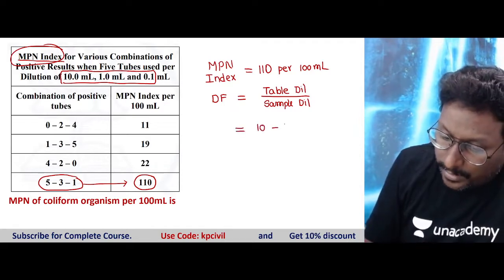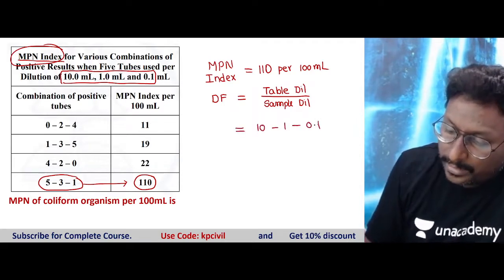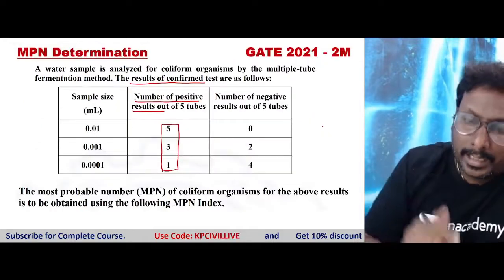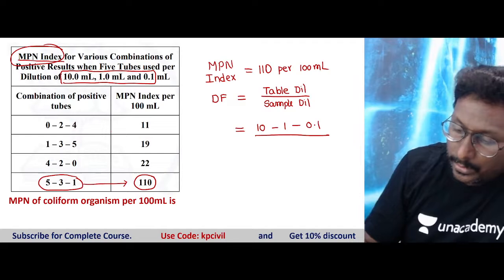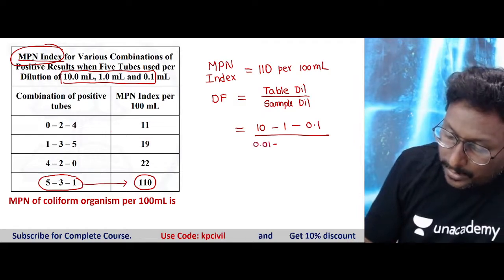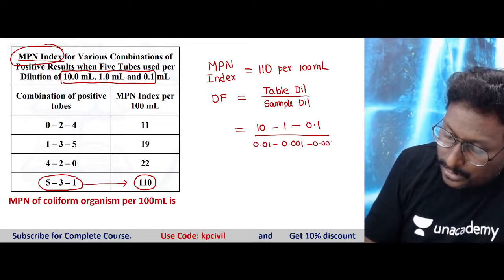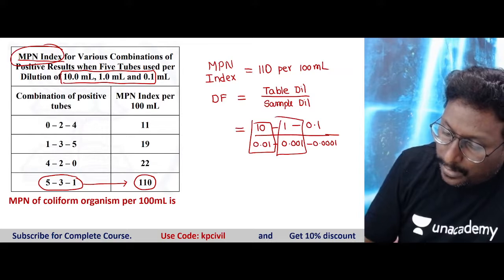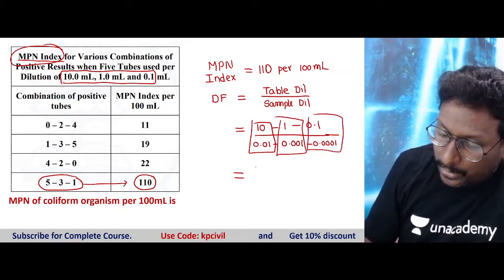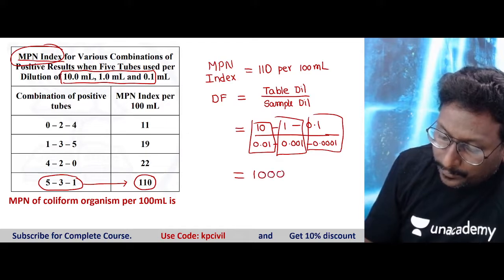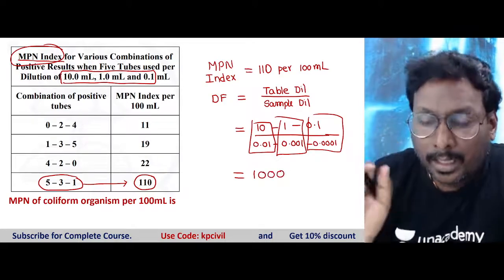And from the sample table, this is the sample size. You can take 0.01, 0.001, 0.0001. So 10 by 0.01, 1 by 0.001, 0.1 by 0.0001, you will get 1000 dilution factor.